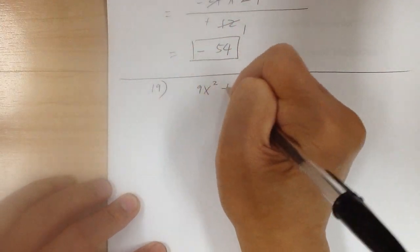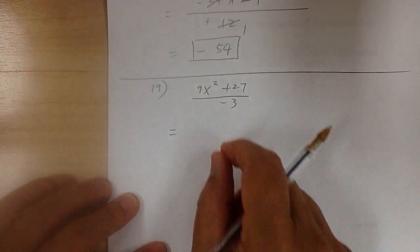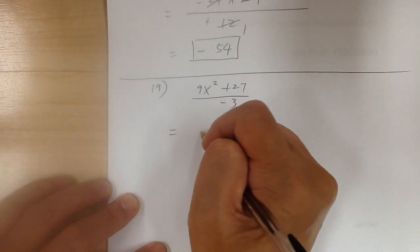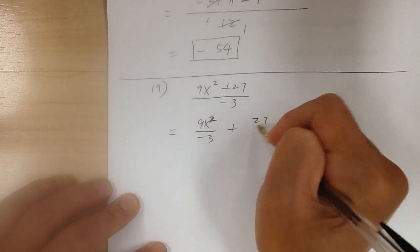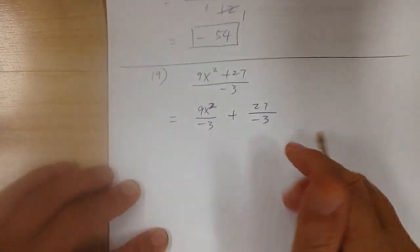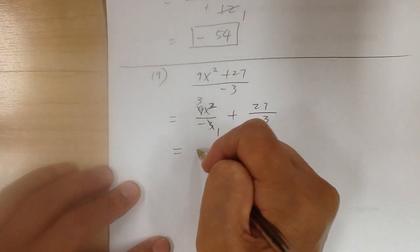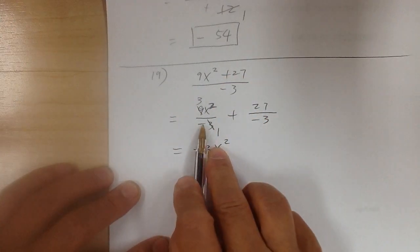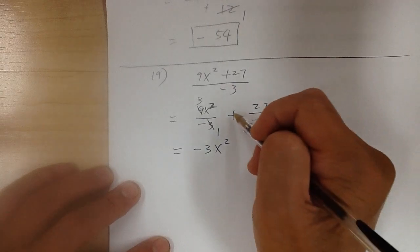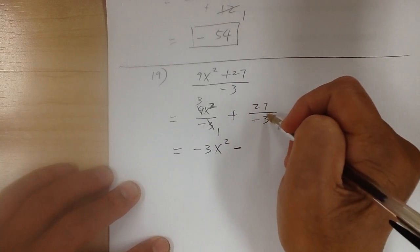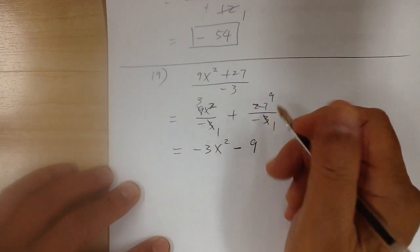Number 19. I have 9x squared plus 27 over negative 3. This is one of the rules we learned earlier — we can undo the common denominator. So we can separate: 9x squared over negative 3, plus 27 over negative 3. Then reduce: 3 and 9 divided by 3 gives 1 and 3, so it would be negative 3x squared. The negative can go anywhere. Next term: positive times negative gives negative. 27 and 3 divide by 3: I get 1 and 9, so it would be minus 9. And that's it.